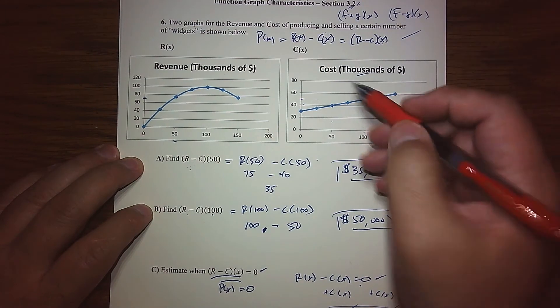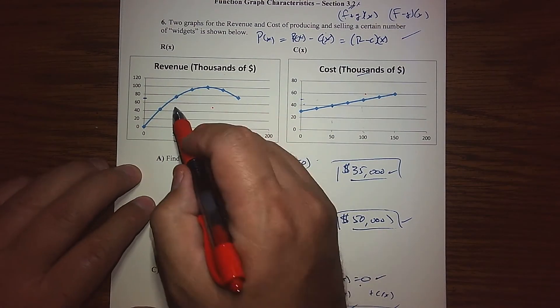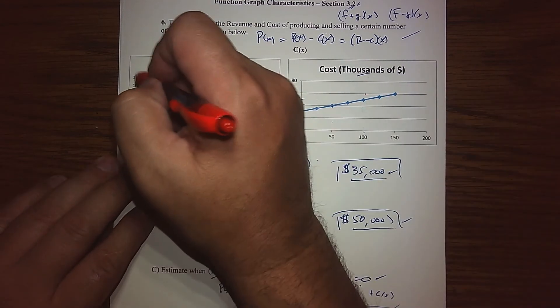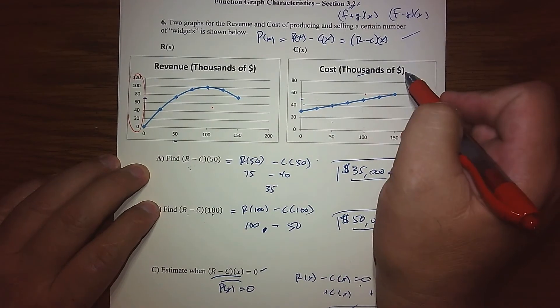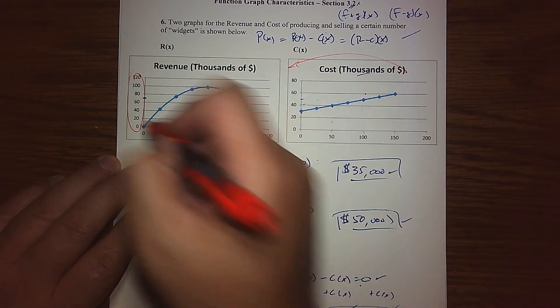To answer this question, maybe we need to either graph the cost function with the revenue together or graph the revenue with the cost function. I think because there's more values along this revenue, it's probably easier to move this over there.